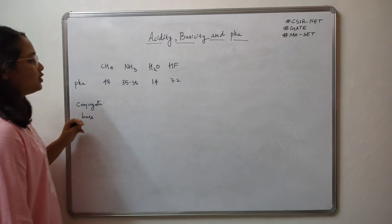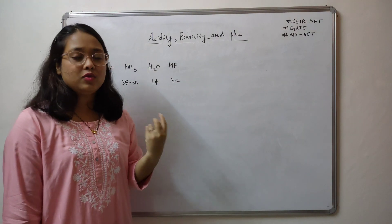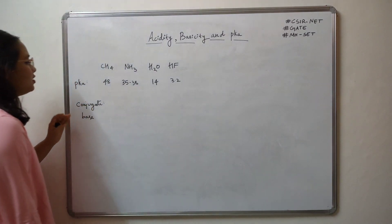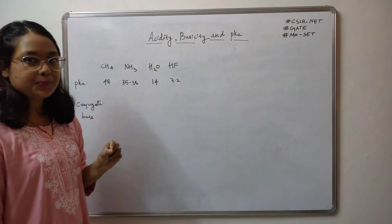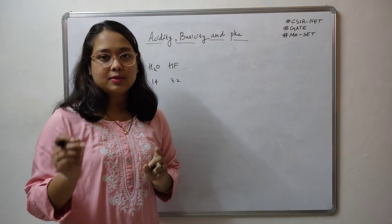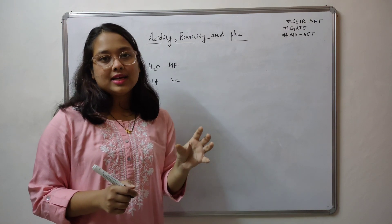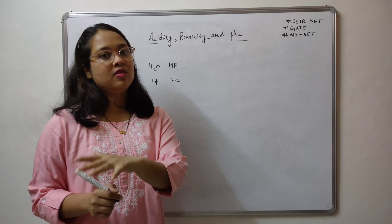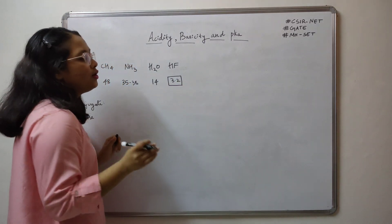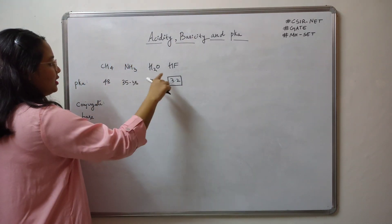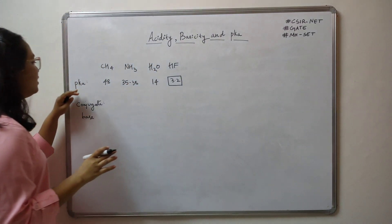Let us take the example of these hydrides: CH4 (methane), NH3 (ammonia), H2O (water), and HF (hydrogen fluoride). We need to identify the strongest acid. The pKa values provided are: CH4 = 48, NH3 ≈ 35–38, H2O = 14, and HF = 3.2. Since a strong acid has a low pKa, the lowest value is 3.2, so hydrogen fluoride is the strongest acid amongst these molecules.